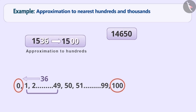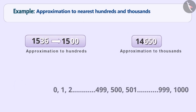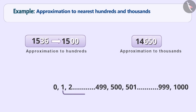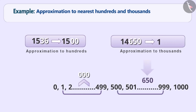Similarly, focus on the last three digits while approximating to nearest thousands. If the number formed by these digits is among any number from 1 to 499, then write 0 in its place. And if it is among any number from 500 to 999, then write 0 in its place and increase the digit at the thousands place by 1.